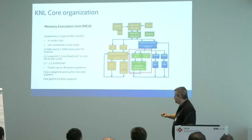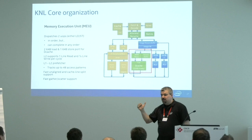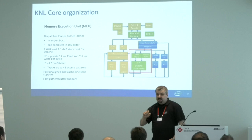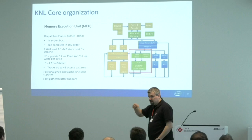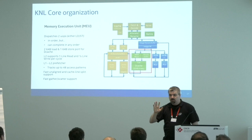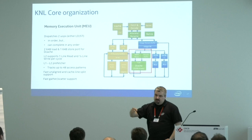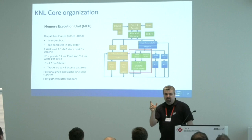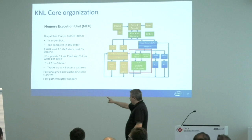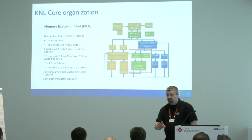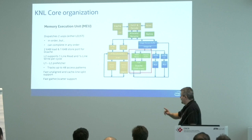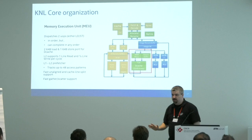There is fast gather-scatter support — the execution unit natively understands the gather and scatter micro-operations. On Xeon it's a microcode sequence; on Knight's Corner it was horrible: there was a loop that restarted every time there was a cache miss, checking a mask register until all elements were loaded. Here gather and scatter are properly supported. But if every element comes from a different cache line, there's still a price — the hardware can't fix that.